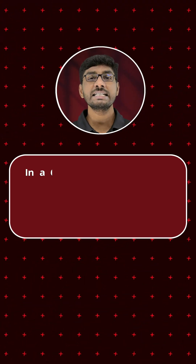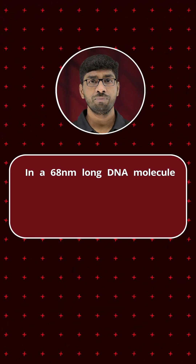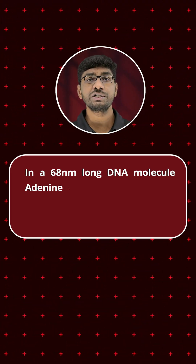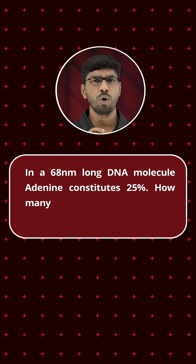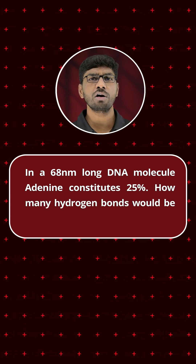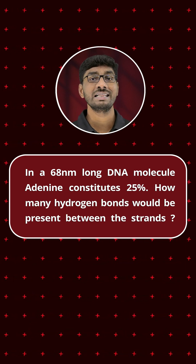Look at this question: in a 68 nanometer long DNA, adenine constitutes 25%. What would be the total number of hydrogen bonds in this DNA strand? How can we solve this type of question?